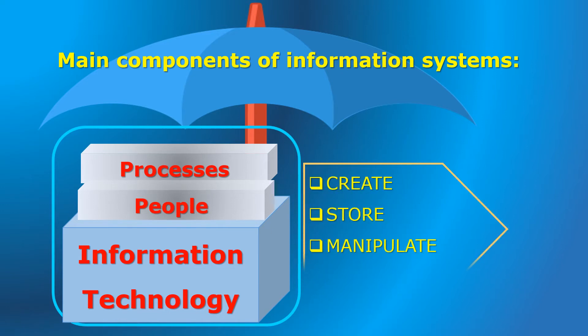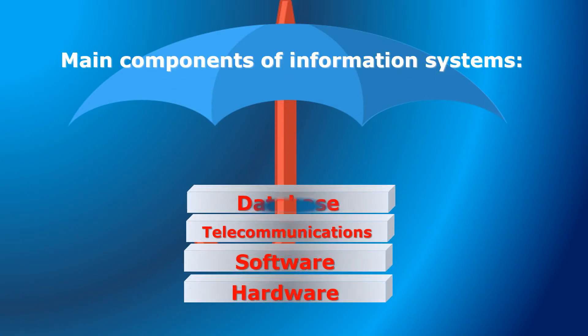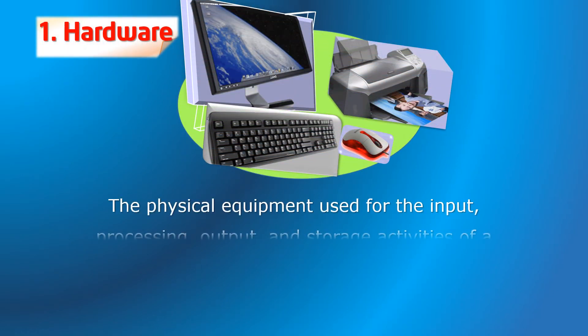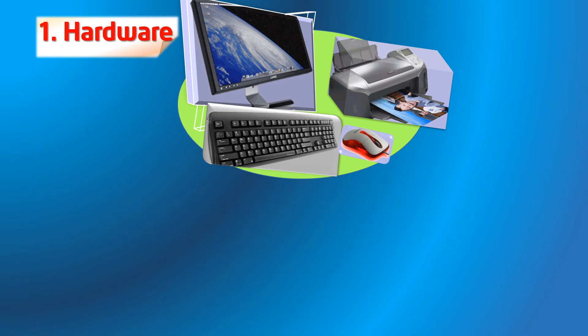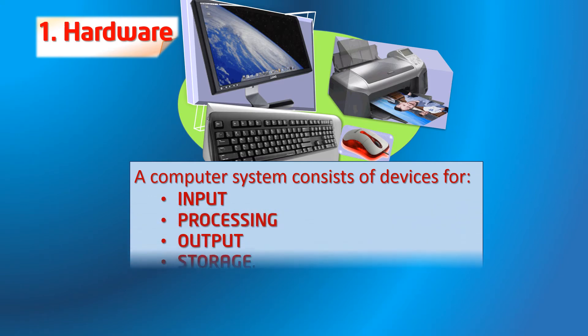Hardware refers to the physical equipment used for the input, processing, output, and storage activities of a computer system. Thus, a computer system consists of devices for input, processing, output, and storage.